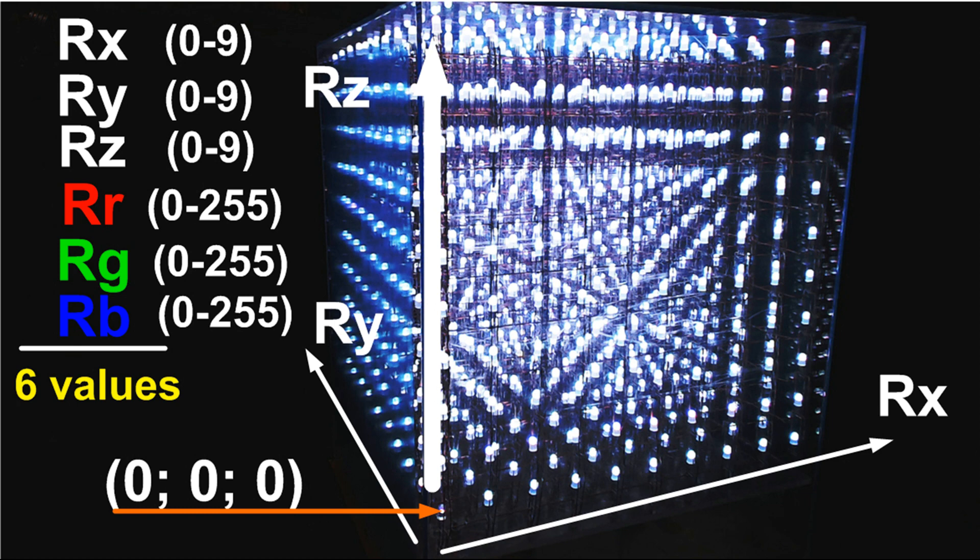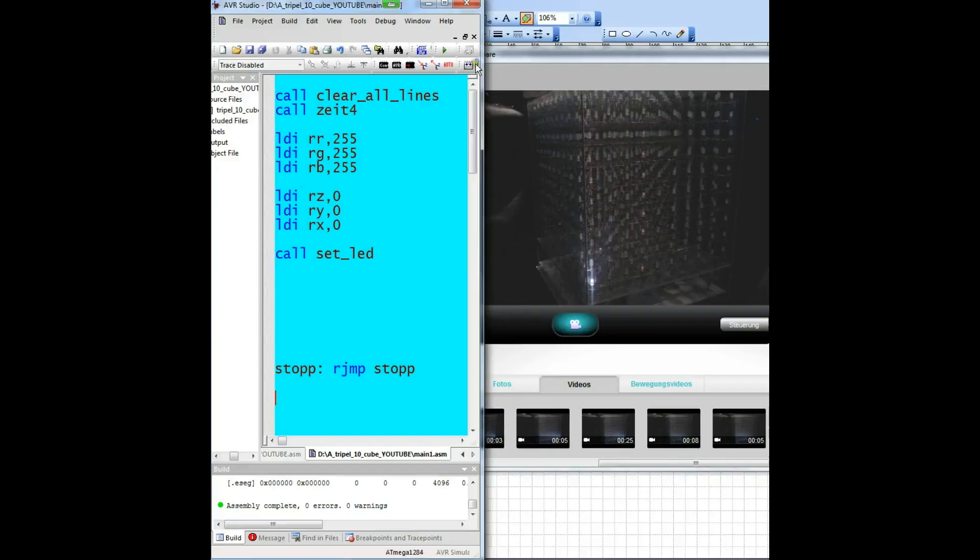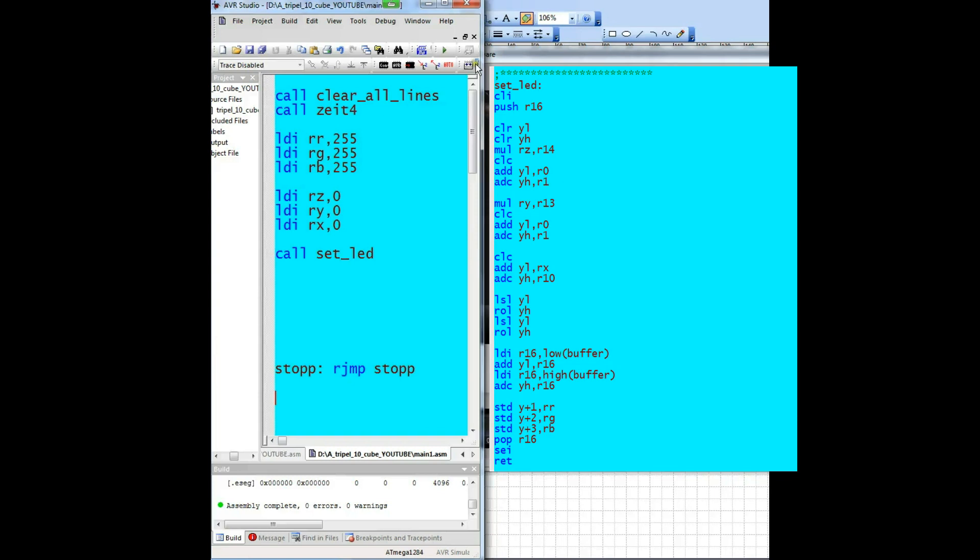So there exist the registers X, Y, and Z, and the registers red, green, and blue. After the execution of this subroutine, the values remain in the registers.